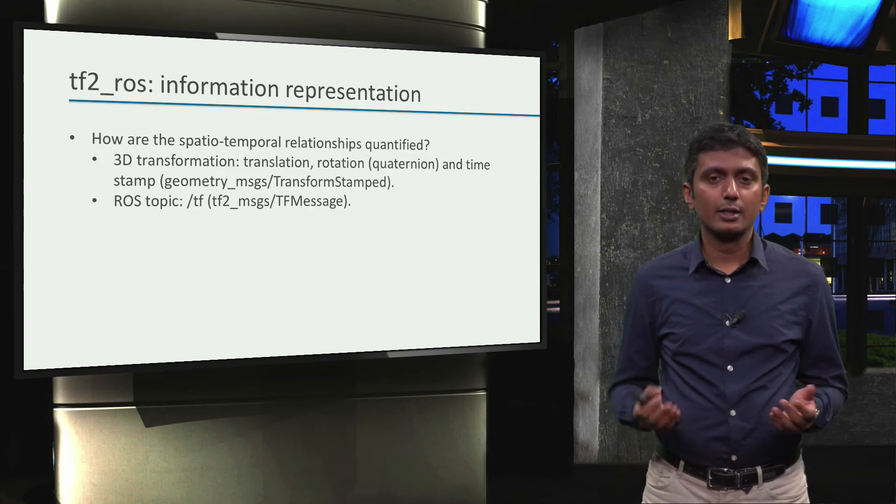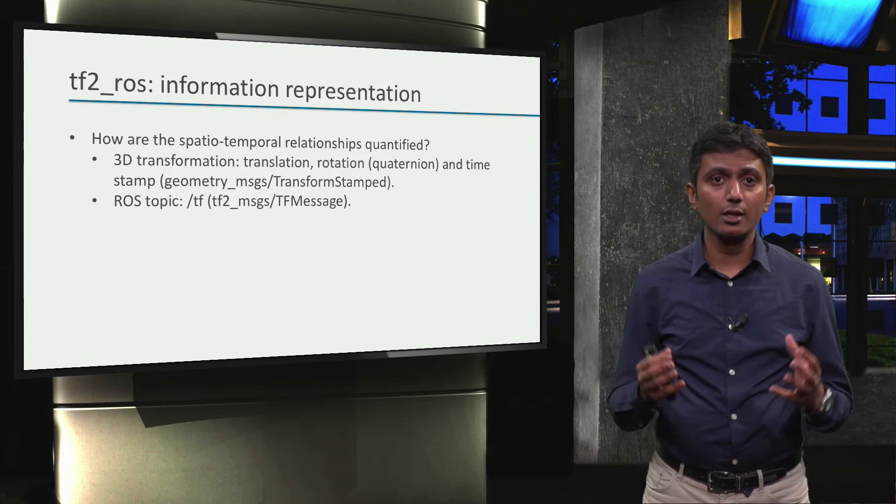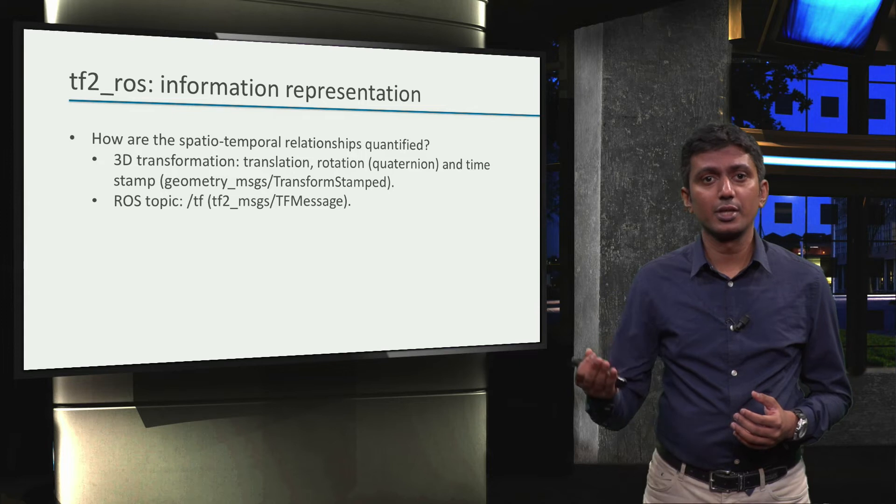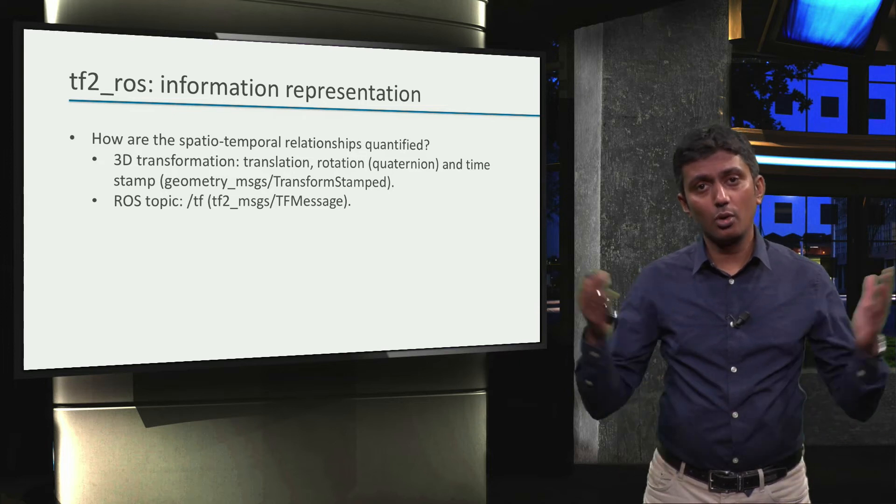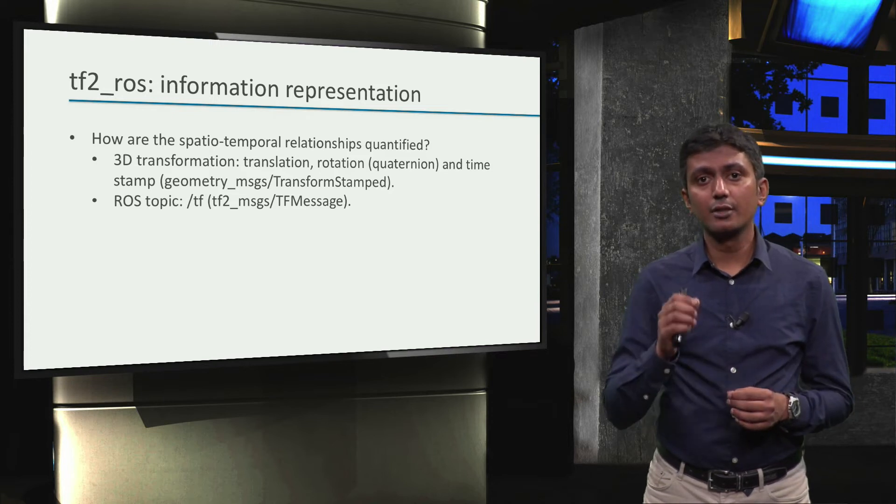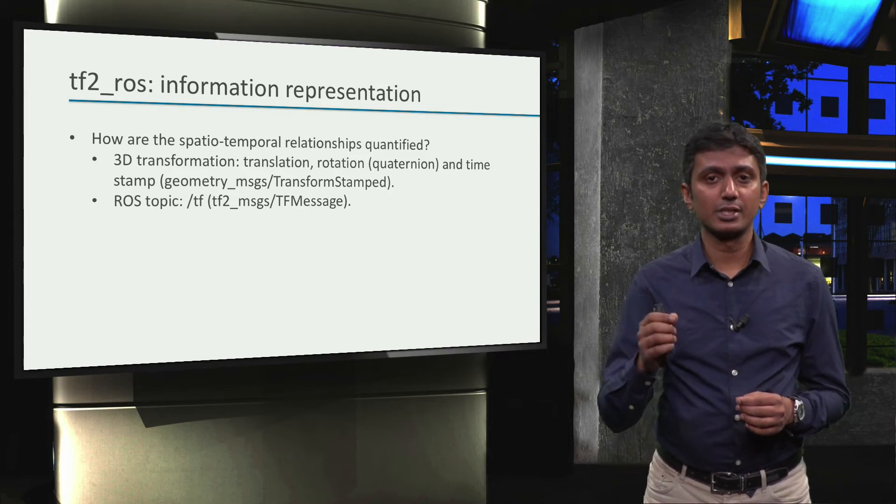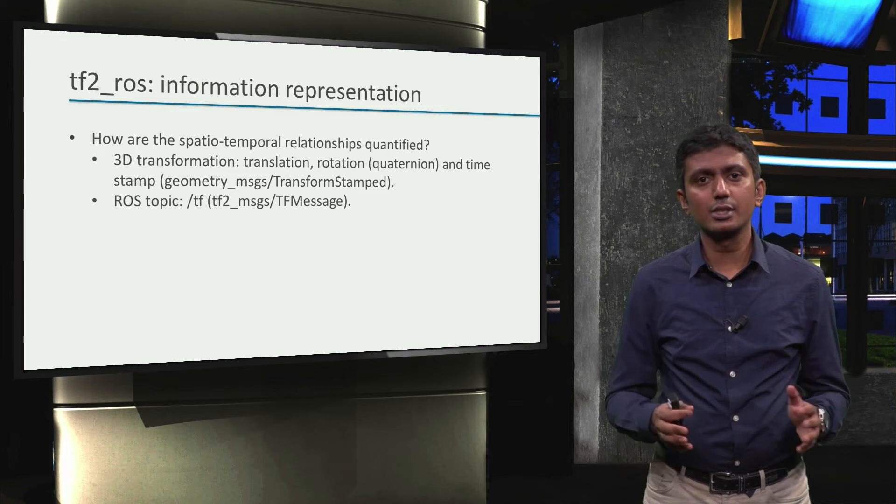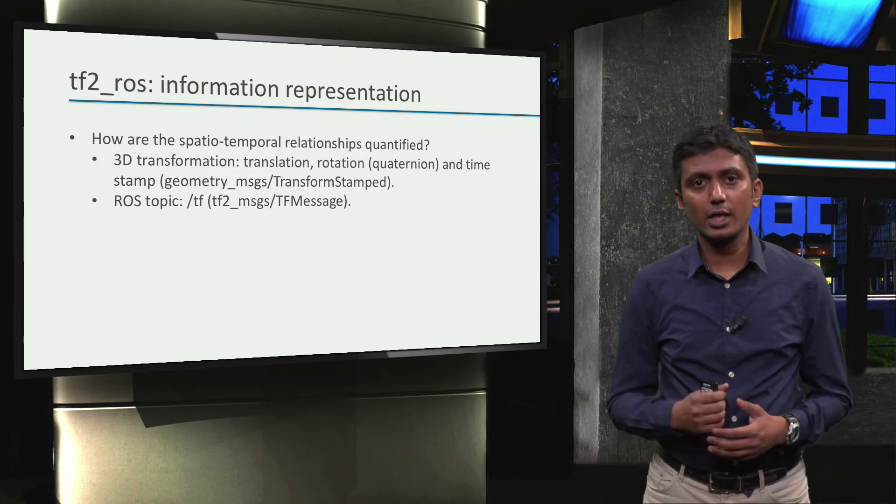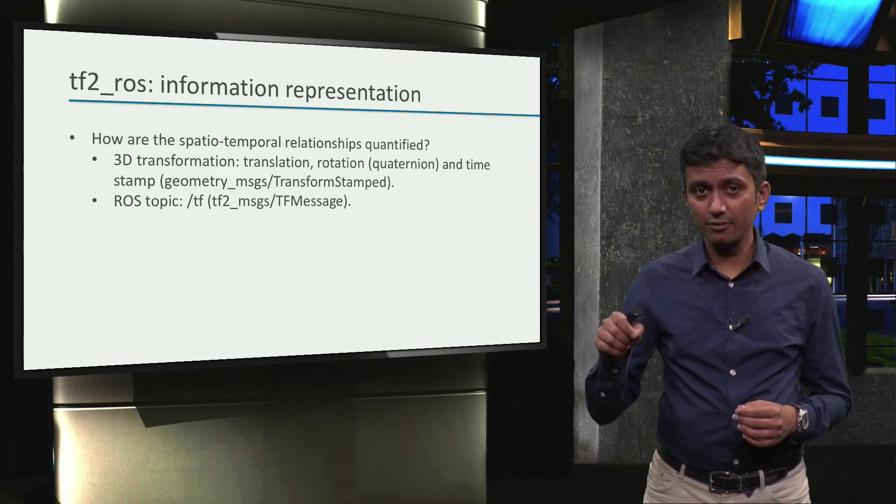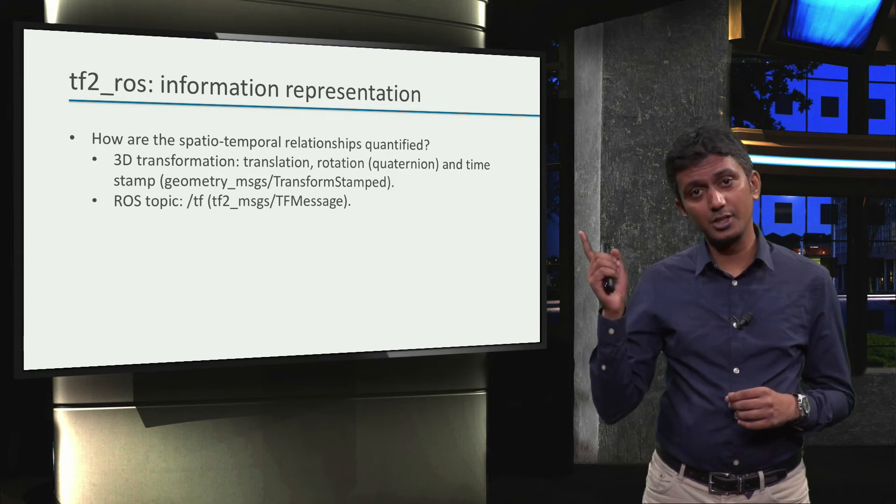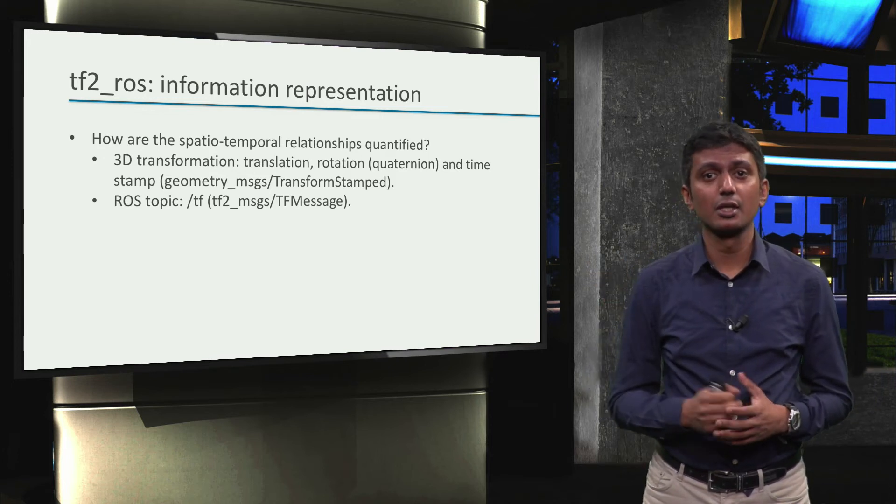And the tf topic is used to aggregate all transforms from our environment, so that transform information can be made available to all ROS nodes in our application. The tf topic carries the tf2_messages tf message data type, which is just an array of TransformStamped message types. Note that it was because of this topic, tf, that we were able to check the tf checkbox in Arvis when we visualized the reference frames a couple of videos ago.